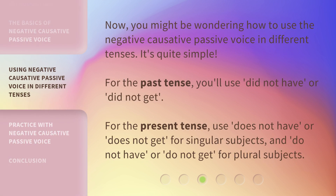Now, you might be wondering how to use the negative causative passive voice in different tenses. It's quite simple. For the past tense, you'll use 'did not have' or 'did not get.' For the present tense, use 'does not have' or 'does not get' for singular subjects, and 'do not have' or 'do not get' for plural subjects.